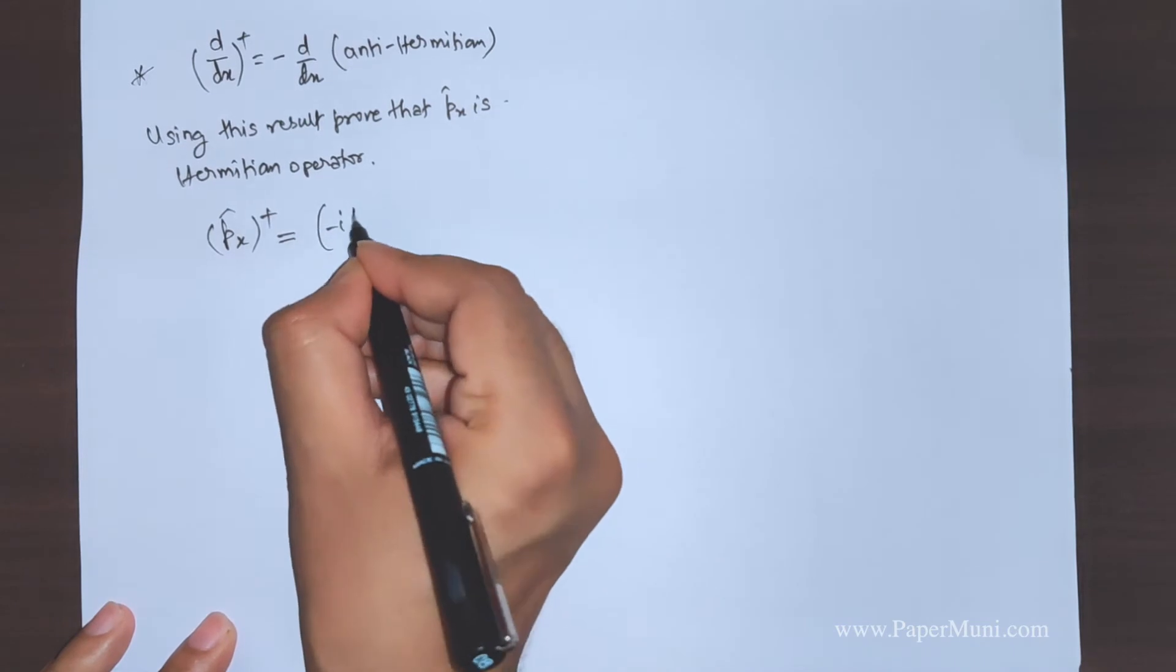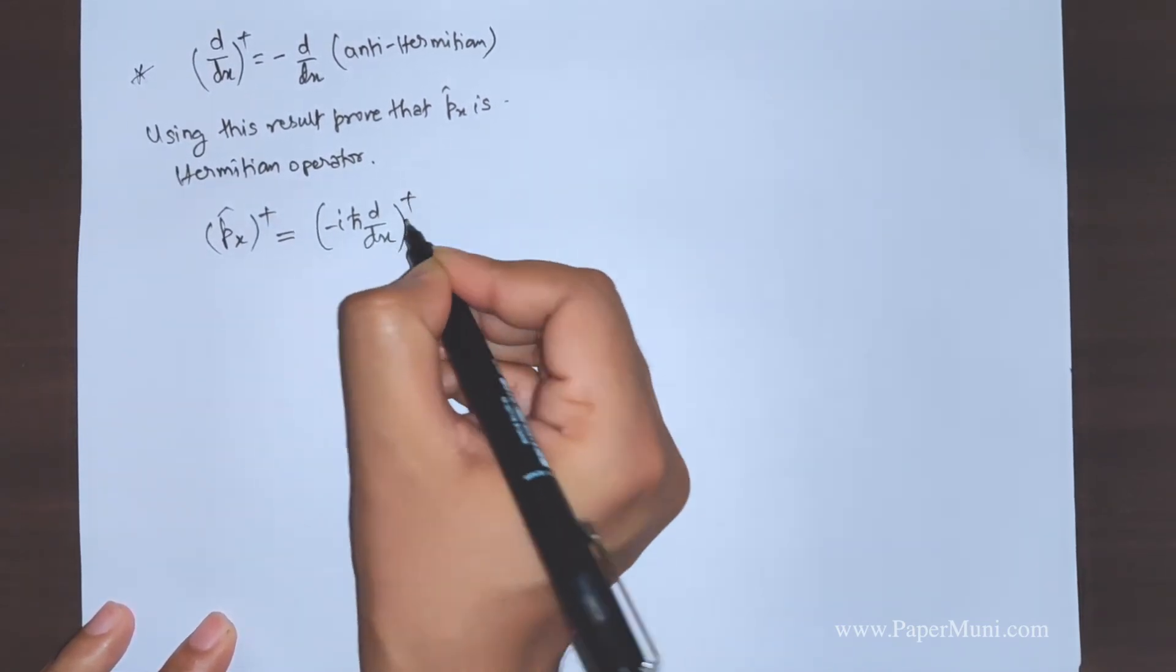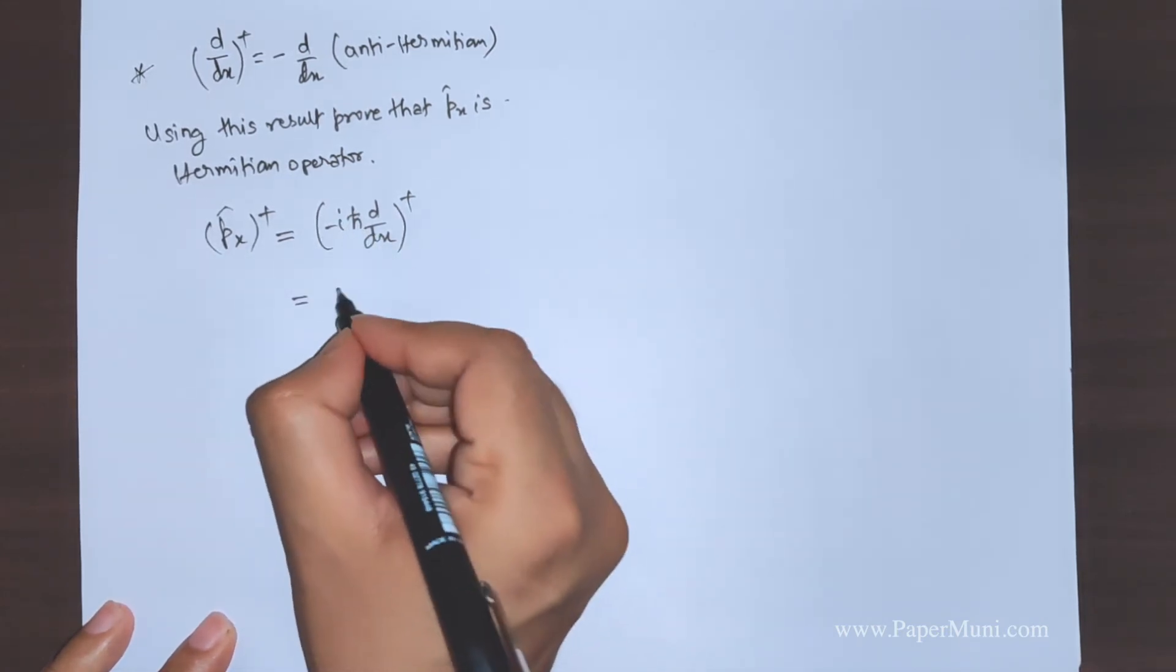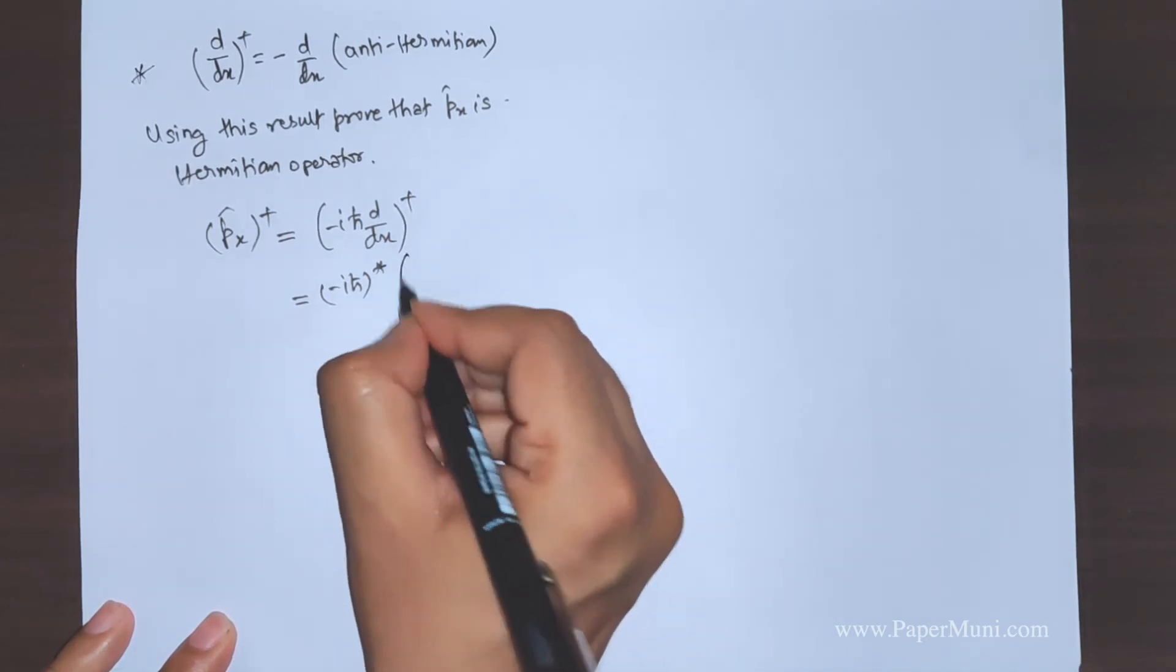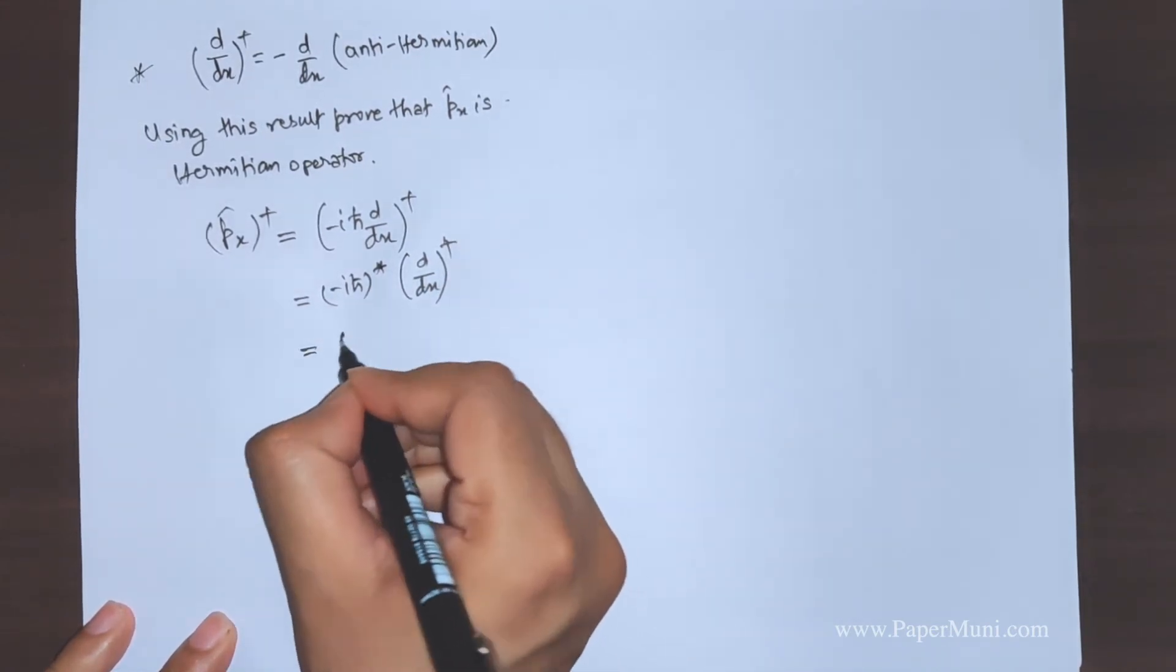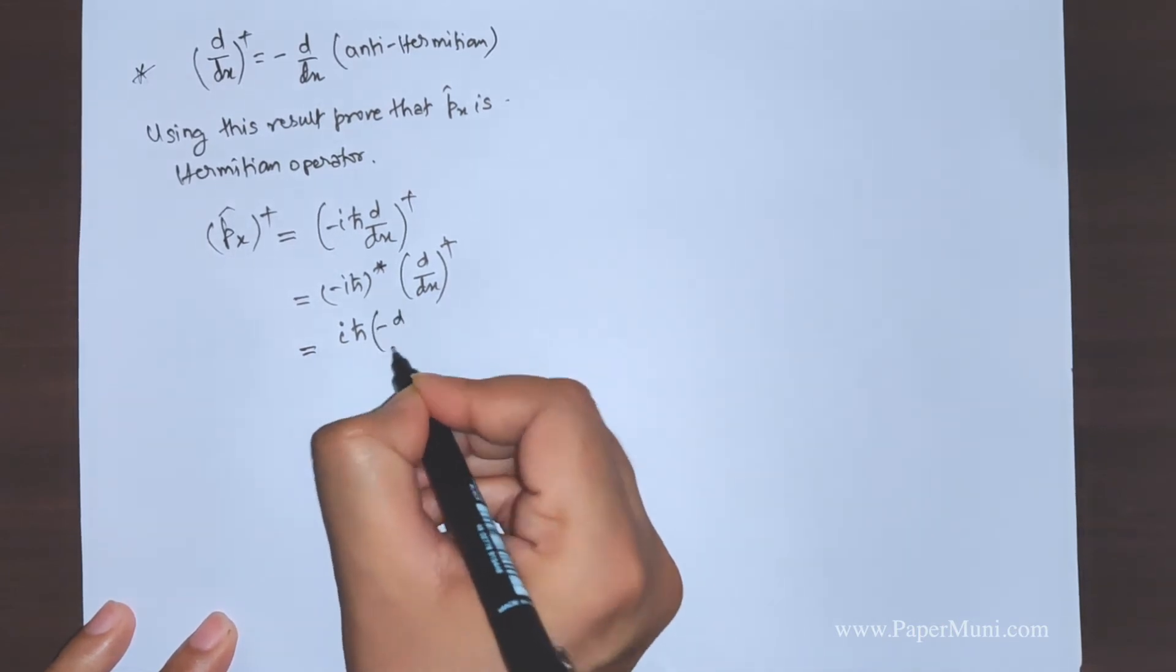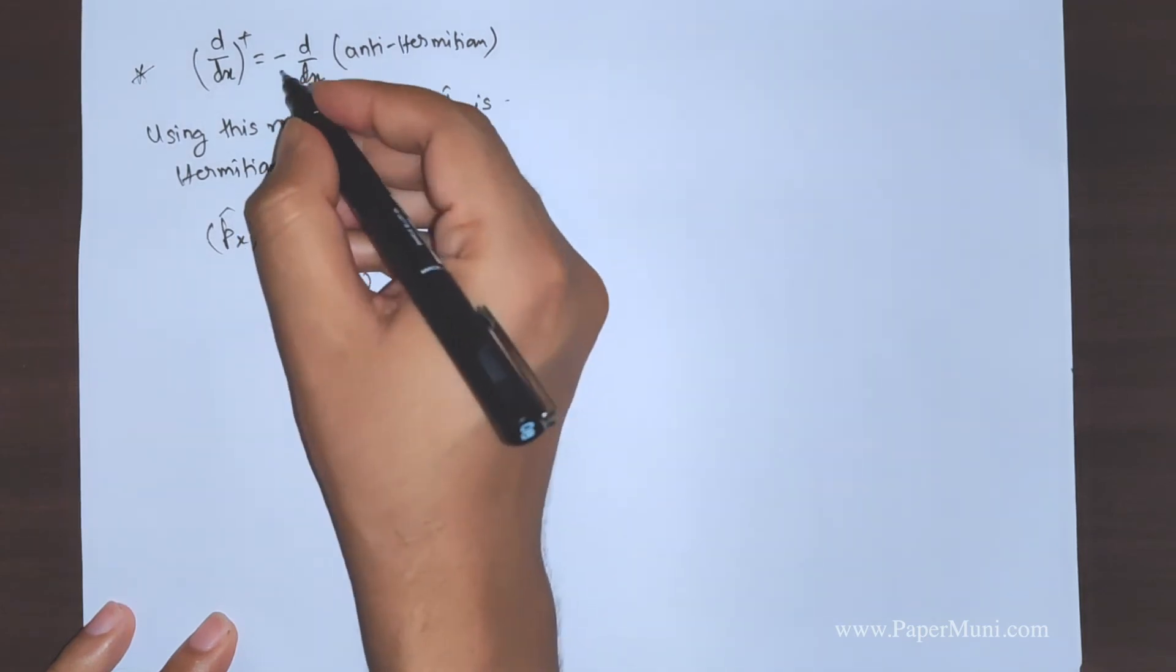We just place the operator in its explicit form and take a dagger. So this is a constant, so the constants are replaced by the complex conjugate and the d/dx, we operate the dagger. Now this one is minus iota is replaced by iota and this gives you minus d/dx because this is already proven.